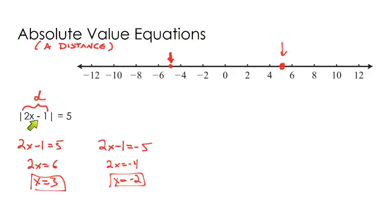I would substitute them both in and make sure that they work. In fact I think we should probably do that. Let me substitute our answer. So if I have two x minus one equals five, the way I'd simplify that is six minus one equals five. And that's good, that works.